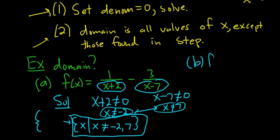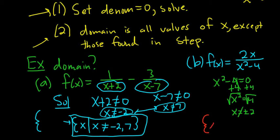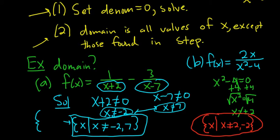Example b: f(x) = 2x over x squared minus 4. Set the bottom equal to 0: x squared minus 4 equals 0, so x squared equals 4, and taking the square root gives x equals plus or minus 2. The domain is everything except plus or minus 2, written in set builder notation as the set of all x such that x is not equal to 2 and not equal to negative 2.